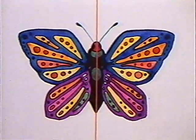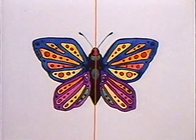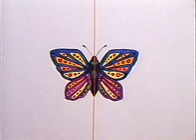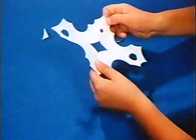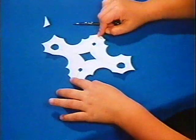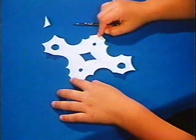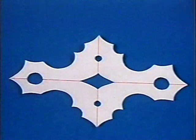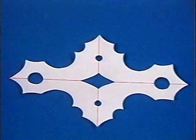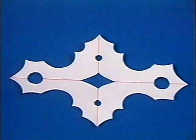Most of the things you have seen so far have had but one line of symmetry. Is it possible for designs and objects to have more than one line of symmetry? How many lines of symmetry has this design? Two — one lies up and down and the other lies crossways.